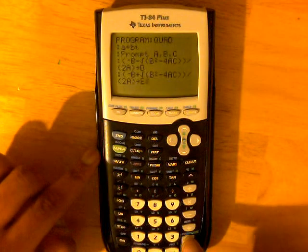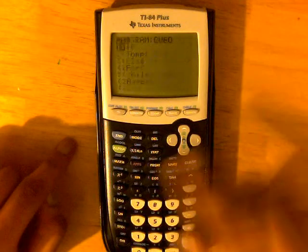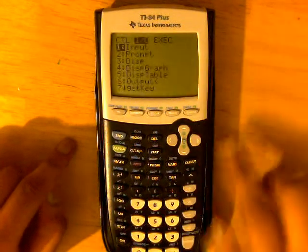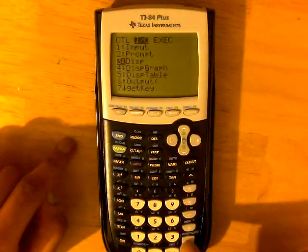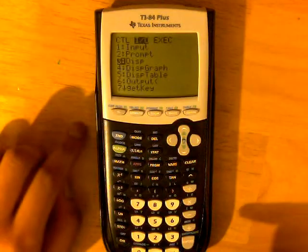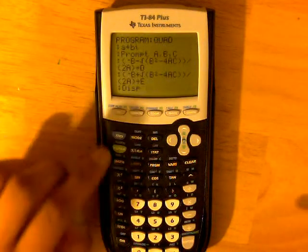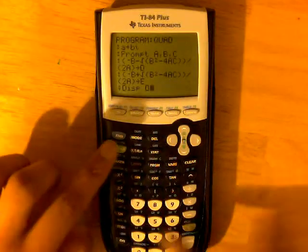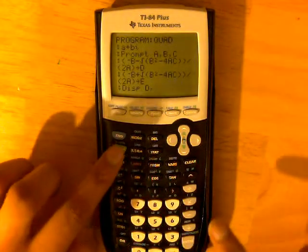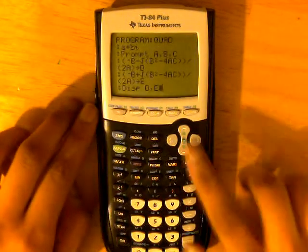And then click Enter again, and then hit Program, slide all the way over to I-slash-O, and enter when you get to Displacement. Then, enter in Alpha-D, comma, Alpha-E, and that's it.